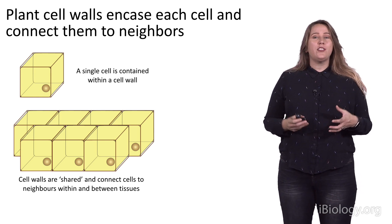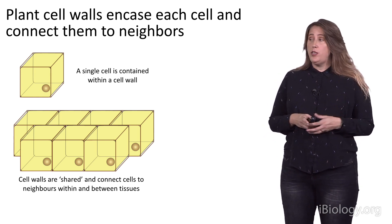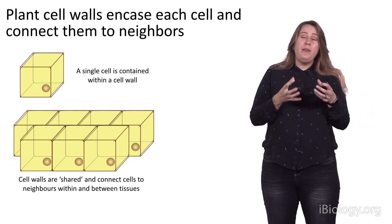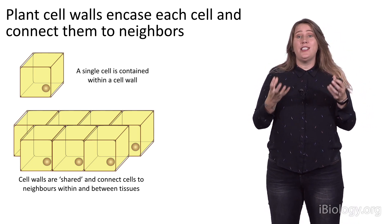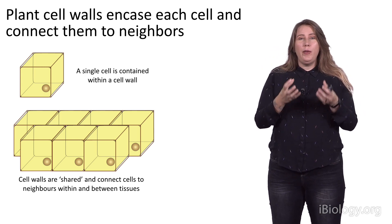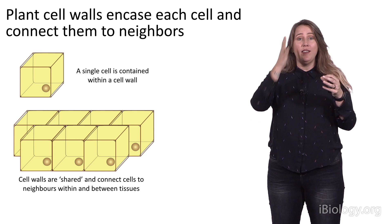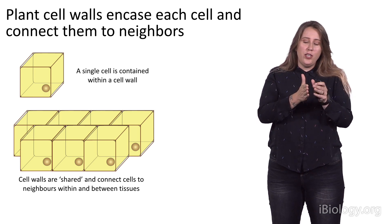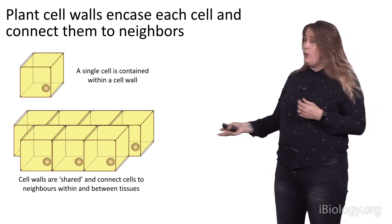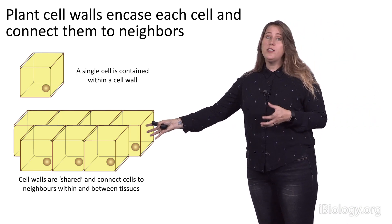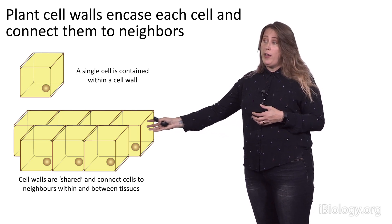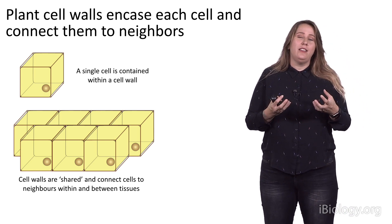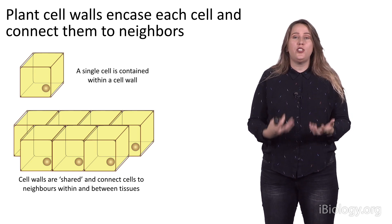Plant cell walls actually encase each cell and connect them to their neighbors. In this example, we have a single cell contained within that cell wall, so the shape the cell can take is really dictated by the cell wall within which it is surrounded. When plant cells grow, expand, and divide, they do so by placing a new cell wall right down the center of the old cell, which means you're connected to your neighbors within a tissue. You end up with an interconnected set of boxes that dictate the shape of the organism, the tissue, and the cells themselves.